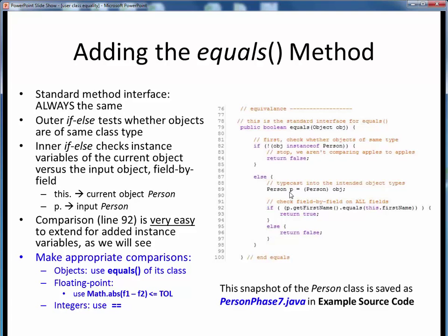And from this point forward, p will represent the input person object we're comparing against.